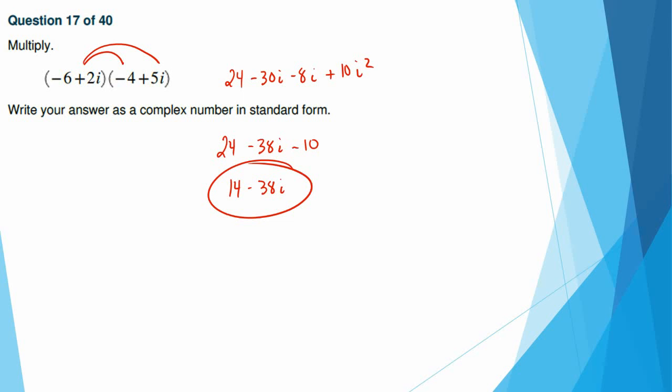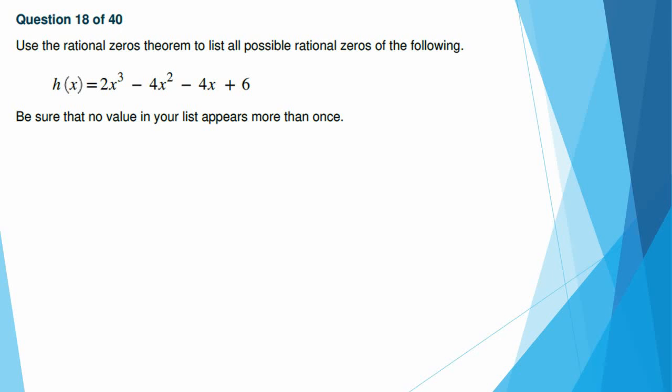All right, 18. Use the rational zeros to list all possible rational zeros. So we're talking about factors of the constant term divided by factors of the leading coefficient. So 6 is going to be plus or minus 1, plus or minus 2, plus or minus 3, plus or minus 6. Factors of the leading coefficient are just plus or minus 1 and plus or minus 2.